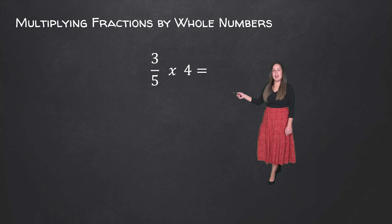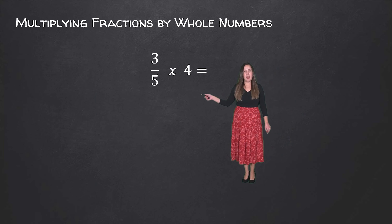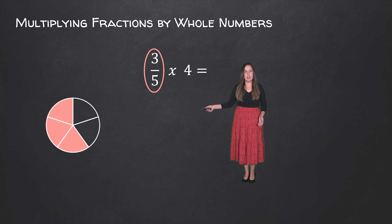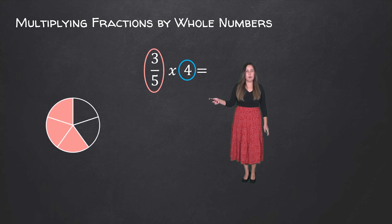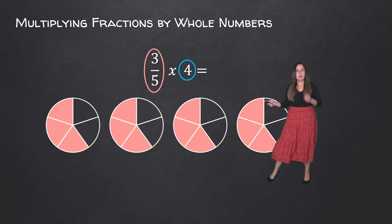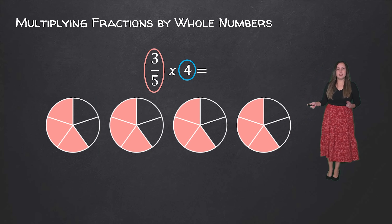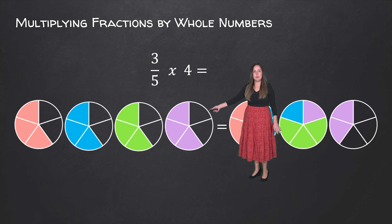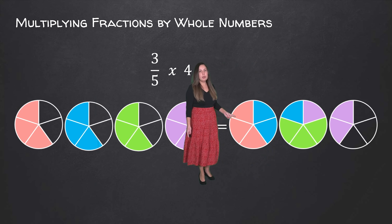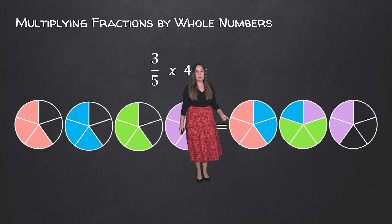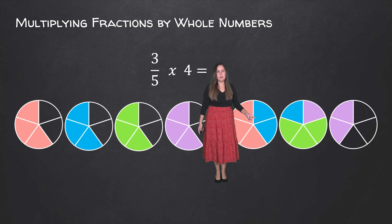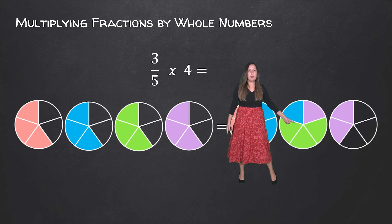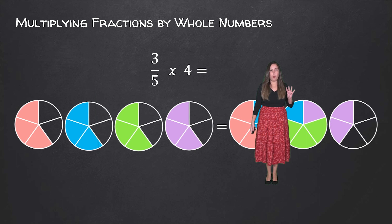Let's take a look at a different example. Here we have 3 over 5 times 4. First we're going to represent 3 out of 5 — we have 3 pieces shaded out of 5 equal parts — and because we're multiplying by 4, we're going to represent that 4 times. So here we have 3 fifths represented 4 times: 3 fifths in pink, plus another 3 fifths in blue, plus another 3 fifths in green, plus another 3 fifths in purple.